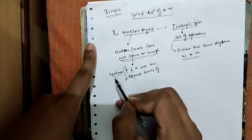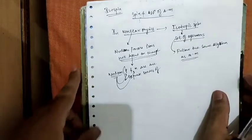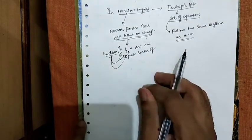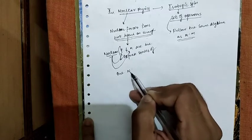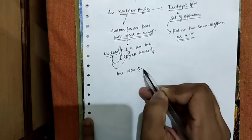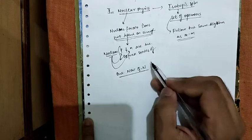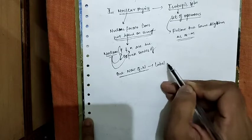The nucleon can be in the proton or neutron state. To resolve this, we introduce a new quantum number, a new label called isospin.